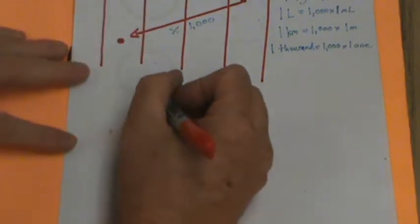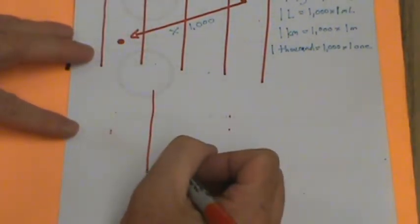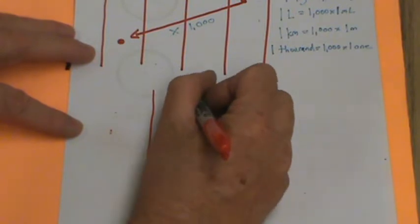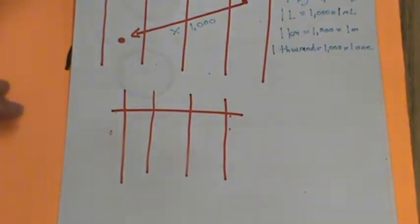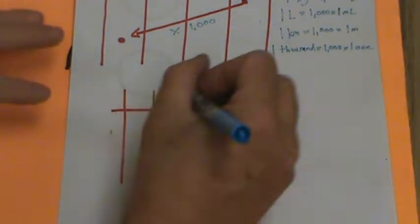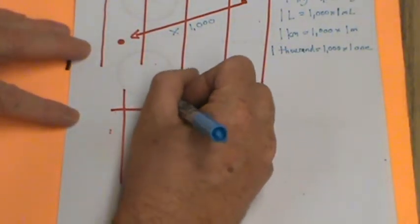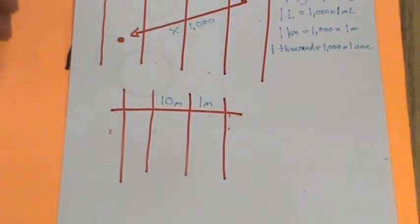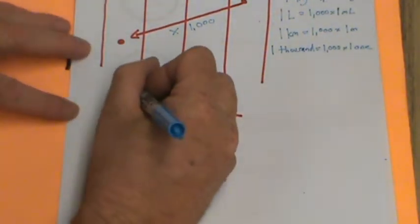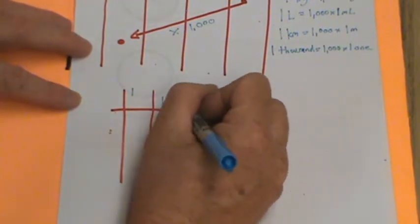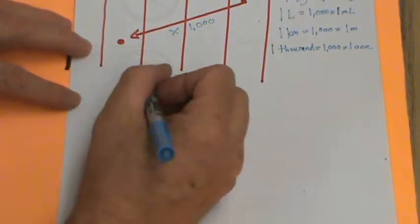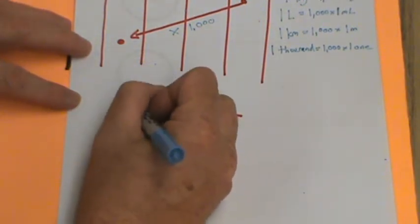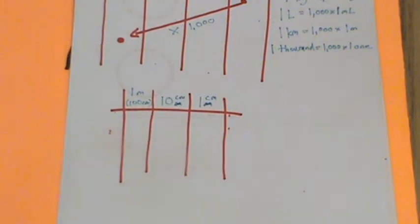We're going to do another one before we turn the page. In this one, we only need three. Excuse me. Nose itches. Okay. So we're going to do this. And we're going to call this one meter, ten meters, and last but not least, one, excuse me, Mr. Leggett. Cross that out. One centimeter, ten centimeters, and then one meter or 100 centimeters. So that's what it looks like.